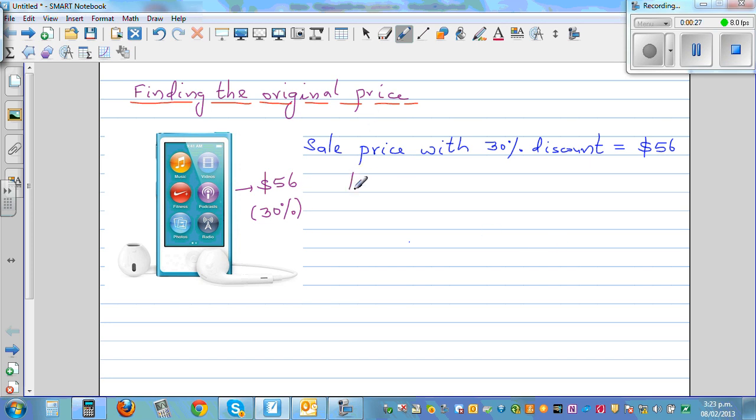So we'll start like this. Let the original price, let me write OP is equal to X. So this 56 is X minus 30% of X. So let me write this like this. Instead, can we write this as, this is the original price minus 30% of original price is equal to 56.